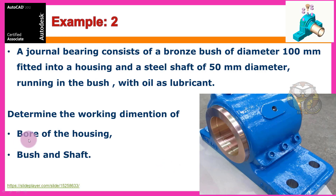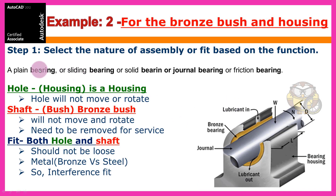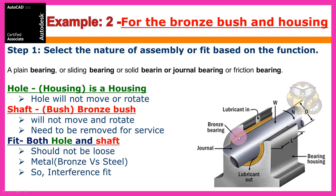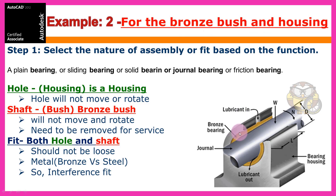The bore of the housing — this is a plain bearing, also called a sliding bearing, solid bearing, journal bearing, or friction bearing. The shaft sits inside the bronze bush, which fits into the housing. The shaft rotates with oil lubrication. The bronze bush is pressed into the housing — this is the fit between these two components.